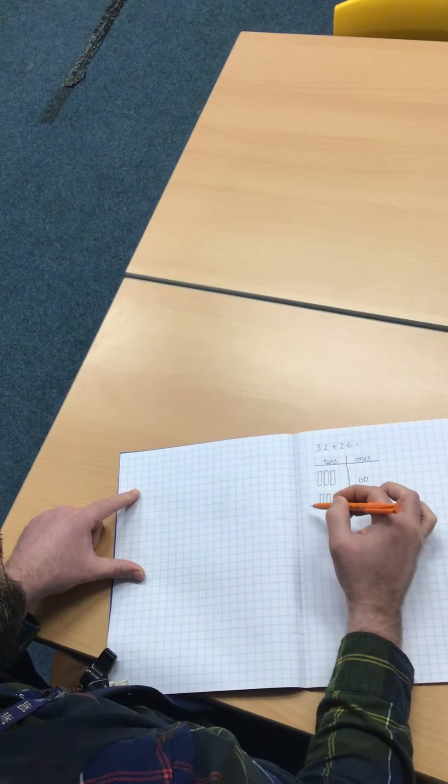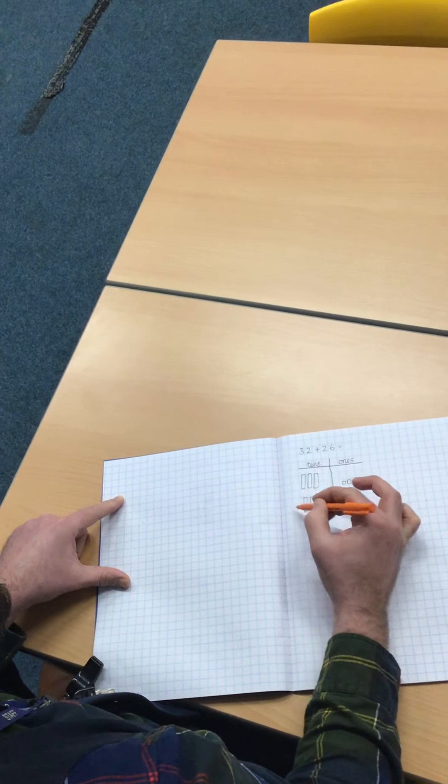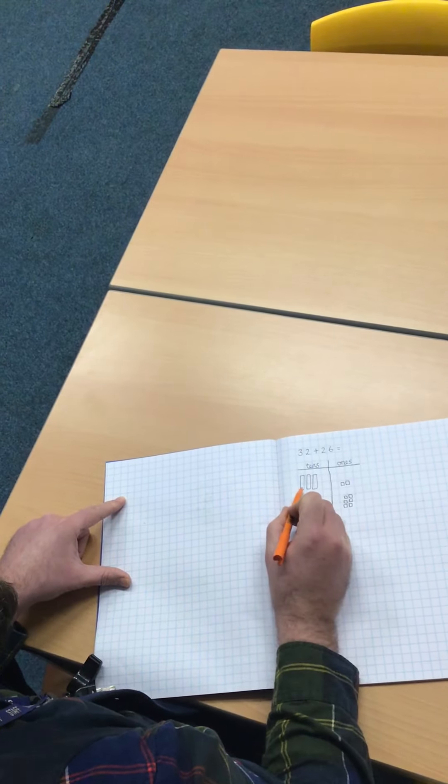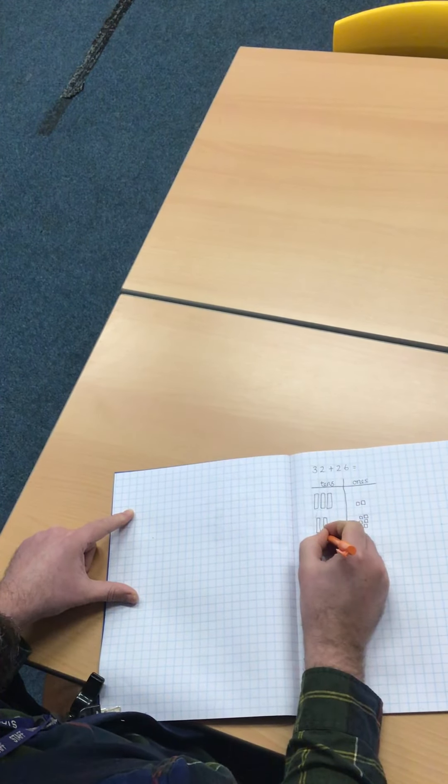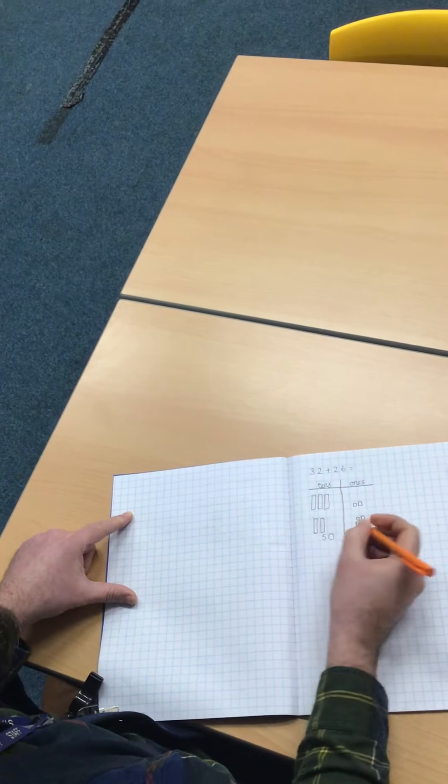Now I'm going to find the total number of tens. I'm going to count up in tens: ten, twenty, thirty, forty, fifty. I'm going to write the number at the bottom of the tens column.